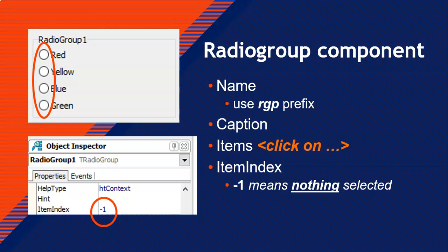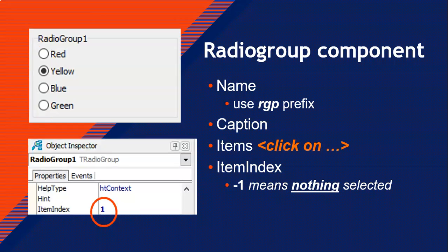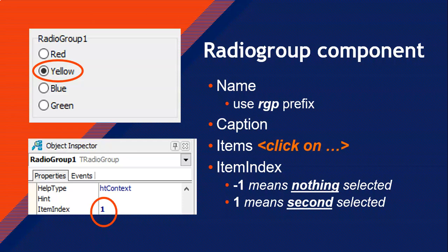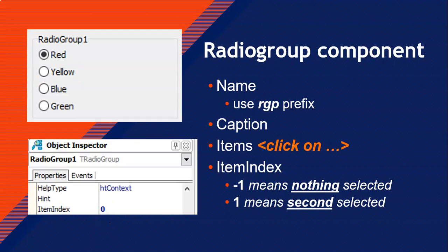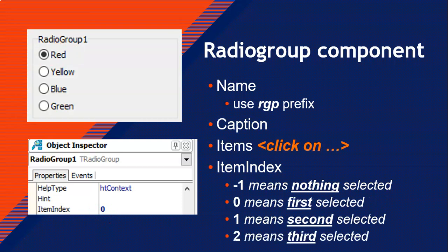Let's change the item index to one — now the second option, yellow, is selected. That tells us the second option has item index one. Before one is zero, so setting item index to zero selects the first option, red. This tells us: zero is the first option, one is the second, two is the third, and so on. The item index always starts at zero, so the fourth option is item index three — always minus one from the option number.